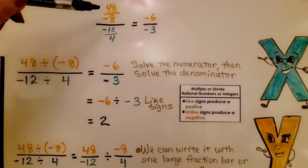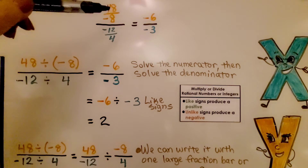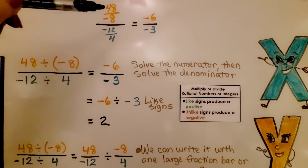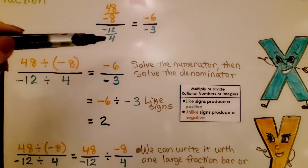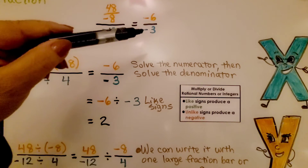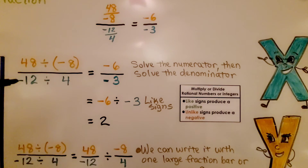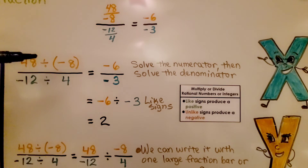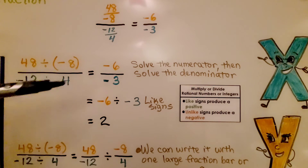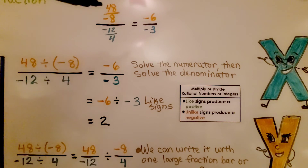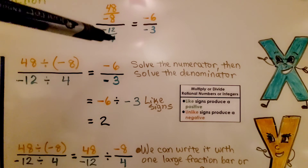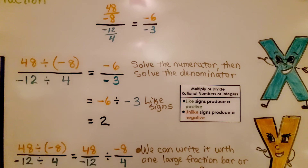Here we have negative 48/8 divided by negative 12/4. We solve the numerator: 48 divided by 8 is 6, but they have unlike signs, so that's negative 6. We have negative 6 over negative 3. We solve the numerator — 48 divided by negative 8 — and the denominator — negative 12 divided by 4 — getting negative 6 over negative 3. They have like signs, so it's going to be positive. We get a positive 2.